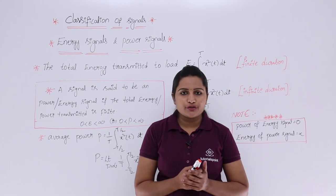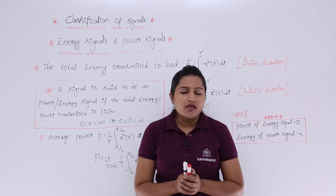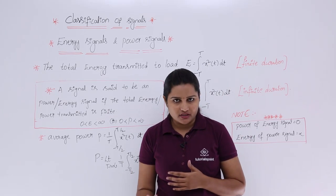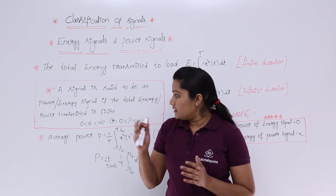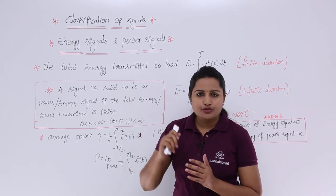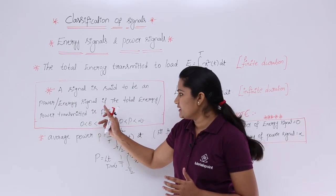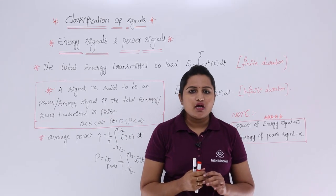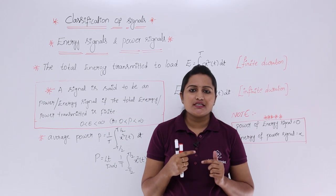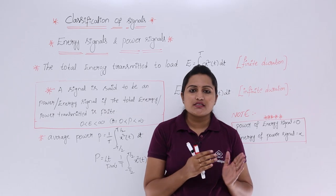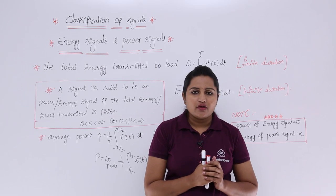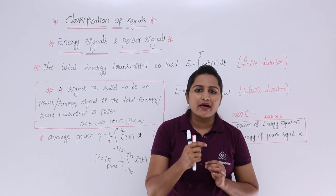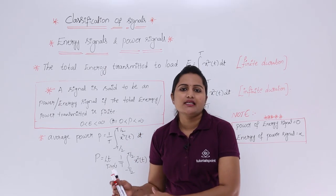In this class we are going to discuss about energy and power signals. A signal is said to be an energy or power signal if the total energy or power transmitted is finite. Whenever total energy transmitted is finite, you can say that signal is an energy signal. Whenever total average power transmitted by that signal is finite, you can say that is a power signal.